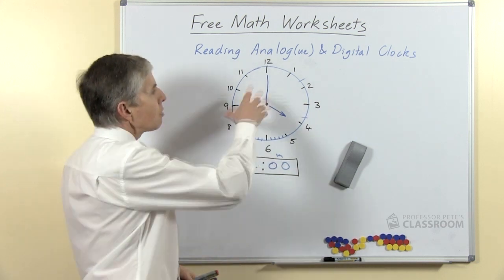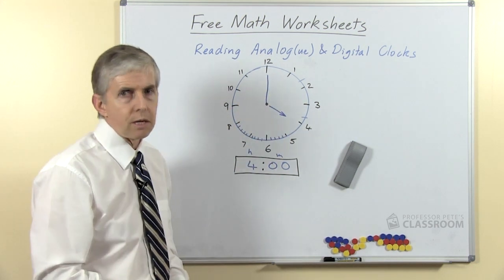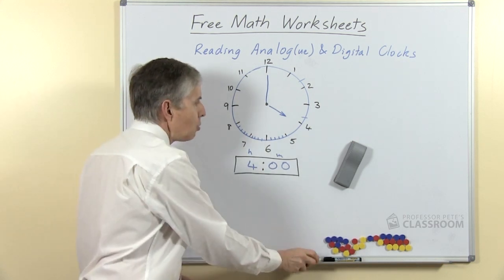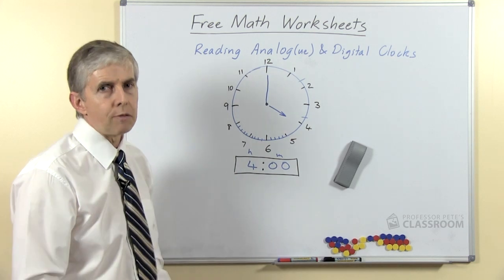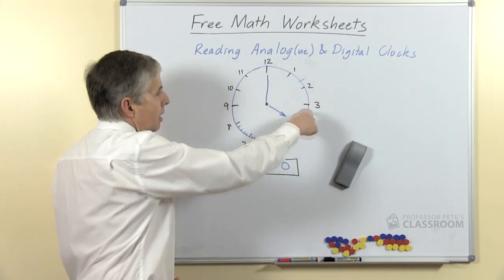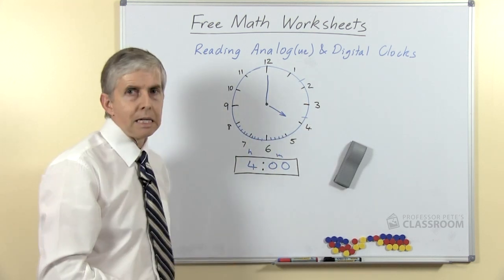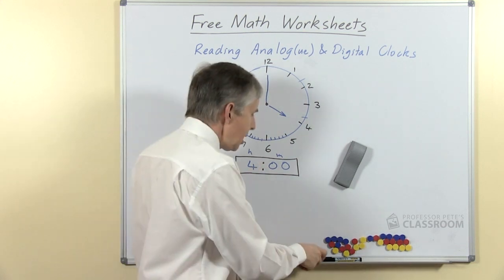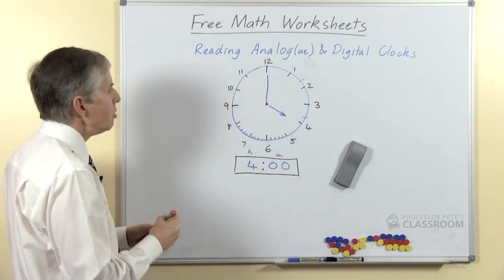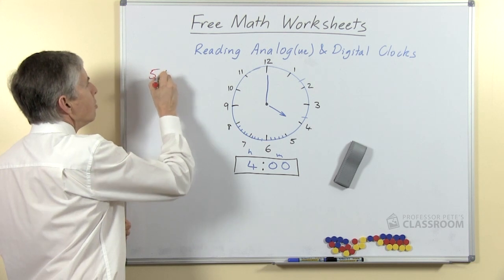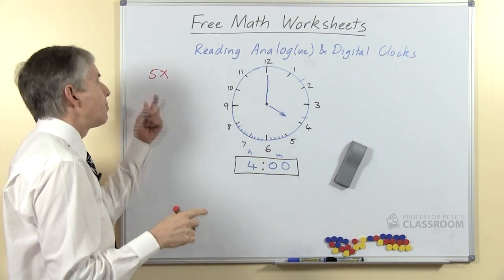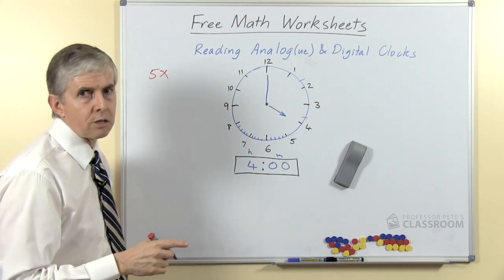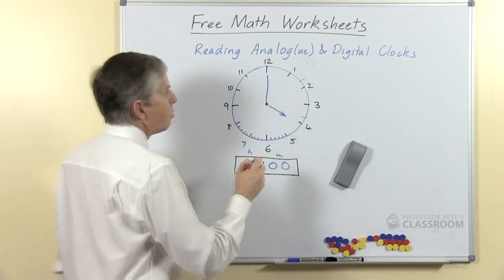And then eventually once the students are familiar with that of course we'll go on to individual minutes, and we will help them read the number of minutes around the clock based on the position of the minute hand. There's a connection here which we can make to the five times table, which might be used to help students learn their five times table, or if they already knew that it might help them learn the times on the clock.